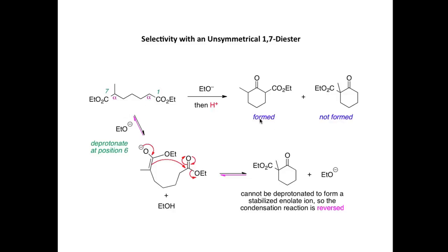When using unsymmetrical 1,7-diesters, you typically get a very selective cyclization — in this case forming this six-membered ring rather than the other one.